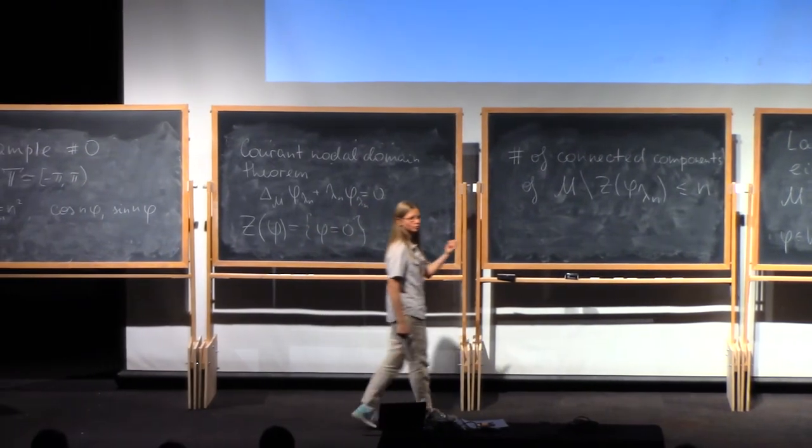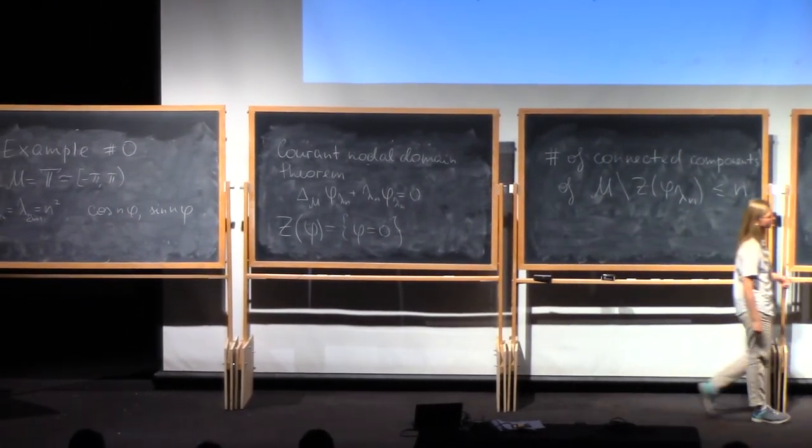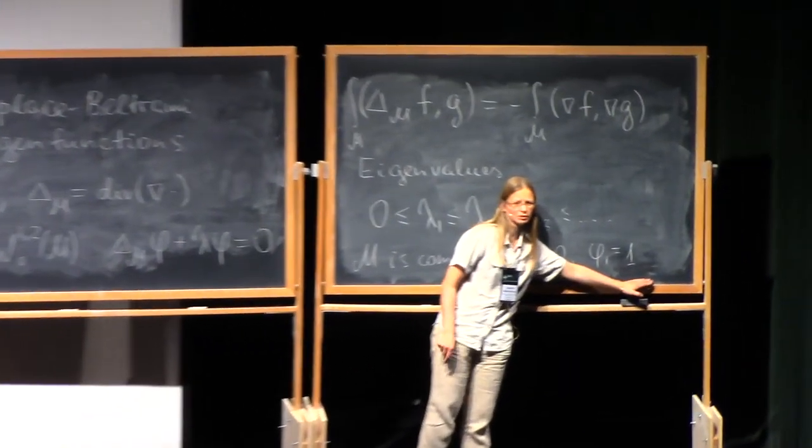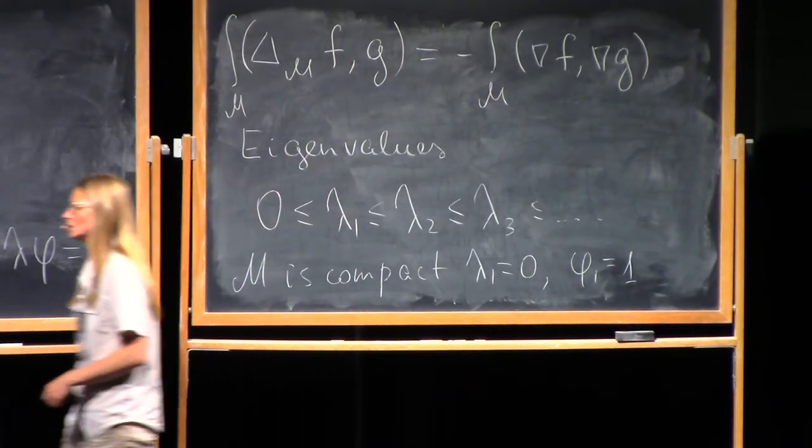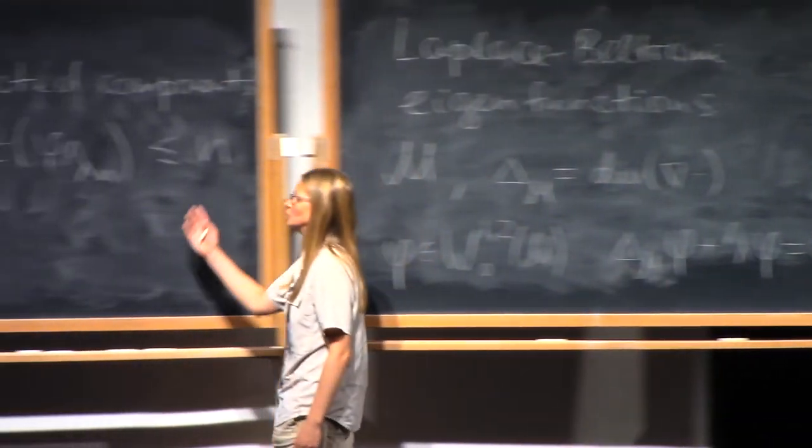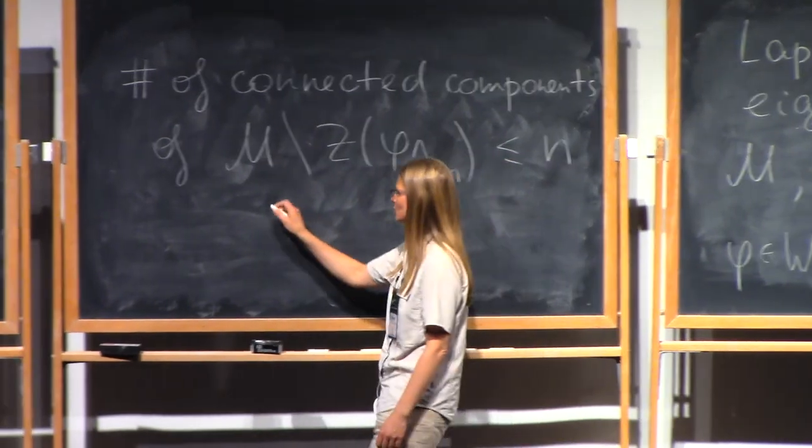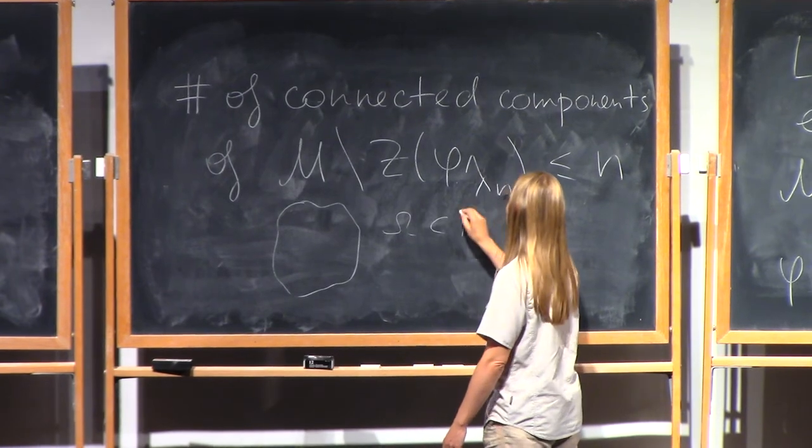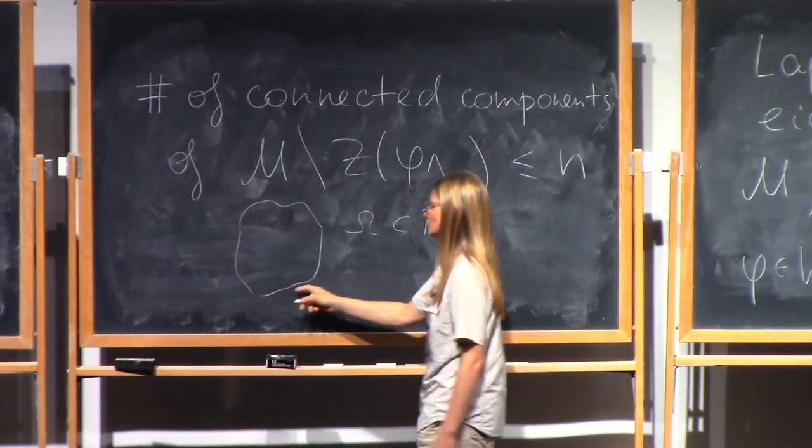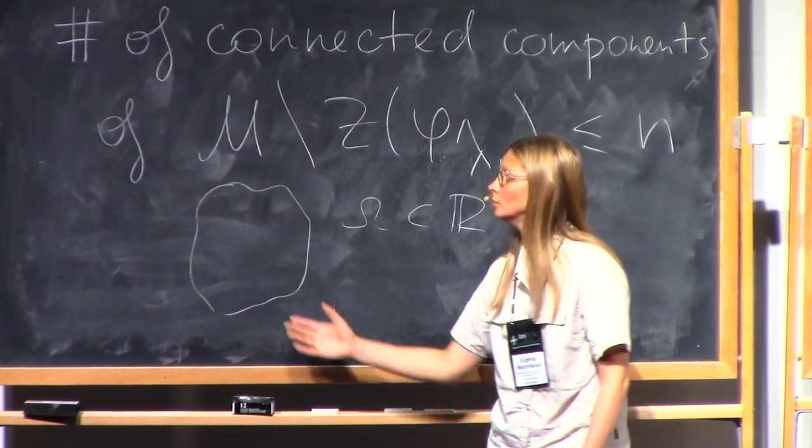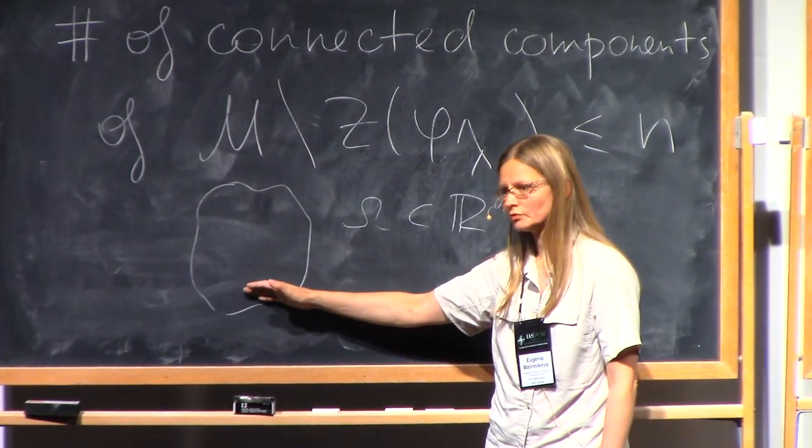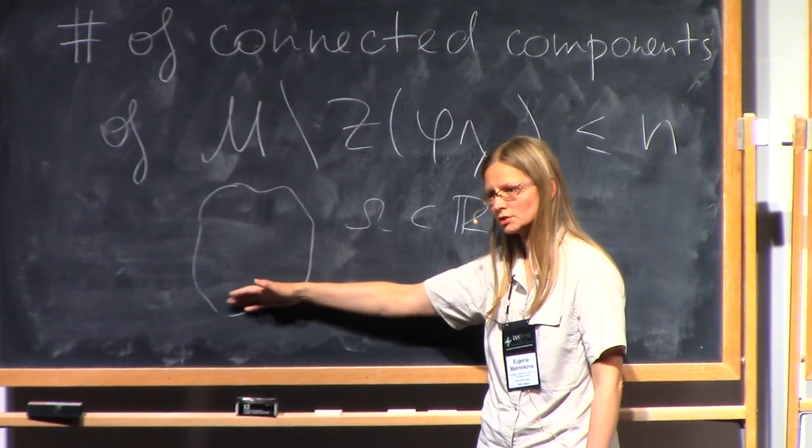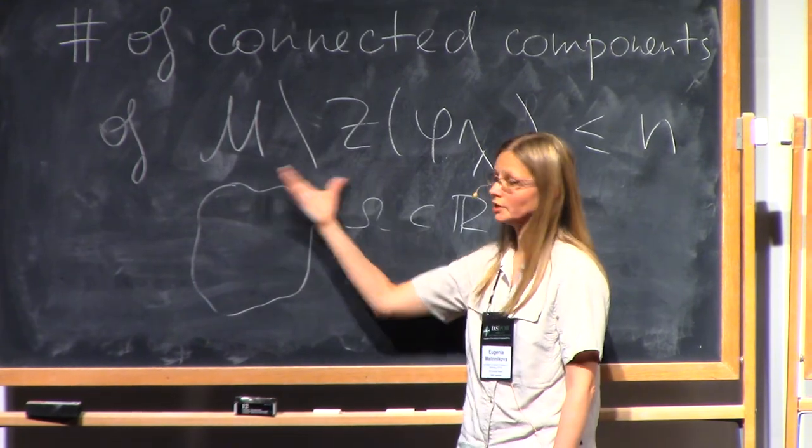And this number is bounded by n. So for the first eigenfunction, you have just one nodal domain. In the case of compact manifold, your function was constant. Its zero set is empty. And there is only one domain here. In the case of domain with boundary, when you have, say, domain in R^n, D with Dirichlet boundary value, Courant nodal domain tells you that the first eigenfunction is positive or negative. It doesn't change sign. There is no zero set there. You don't divide this into pieces.